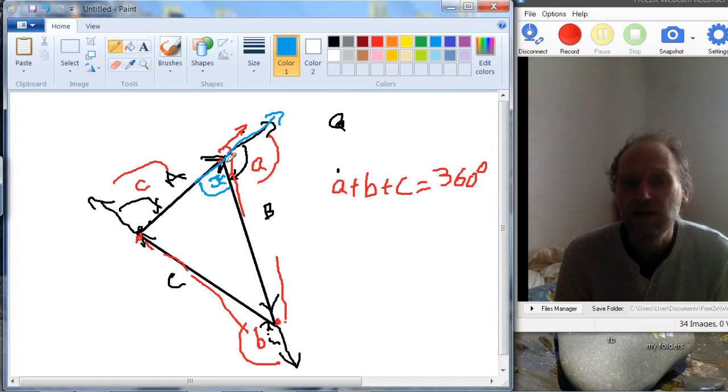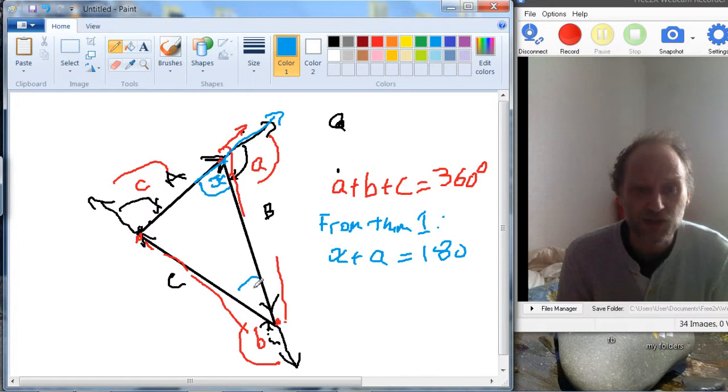We can do that here as well, so Y and Z. X plus, no, sorry, Y plus B this time, on this line.